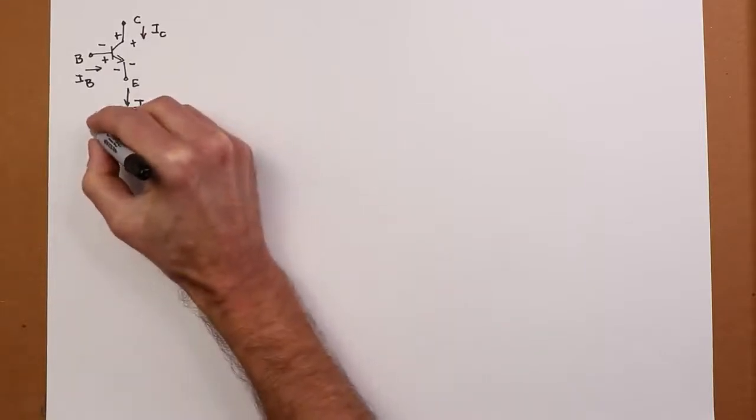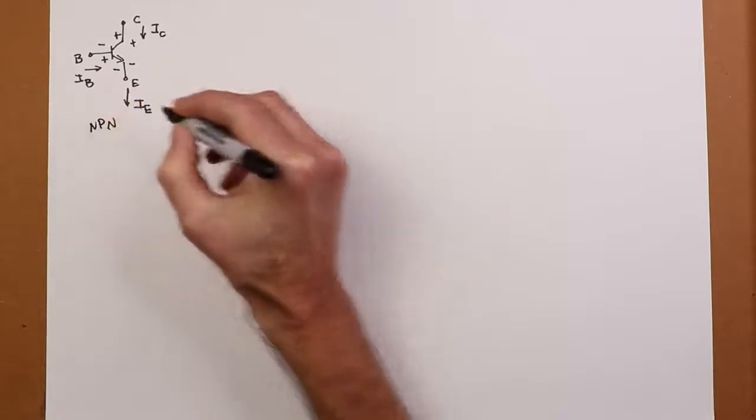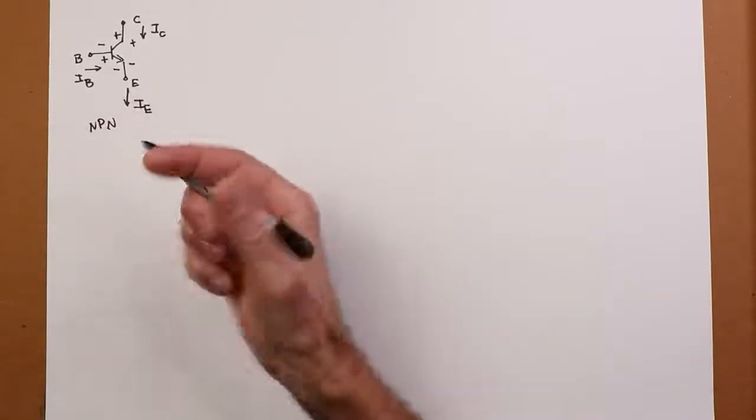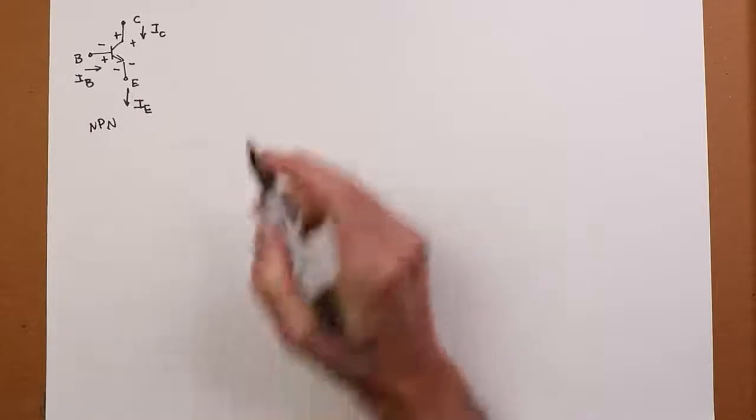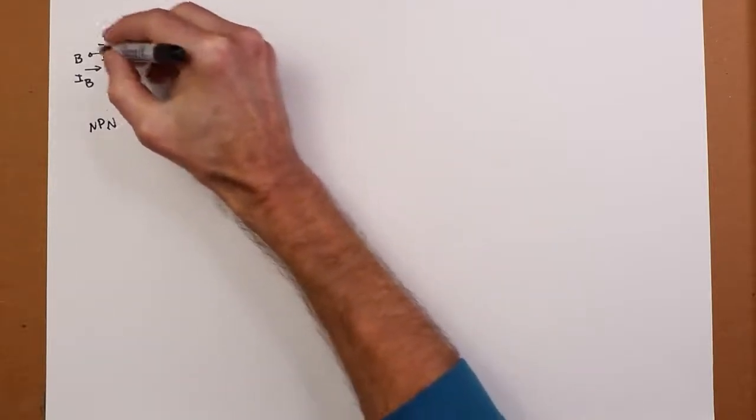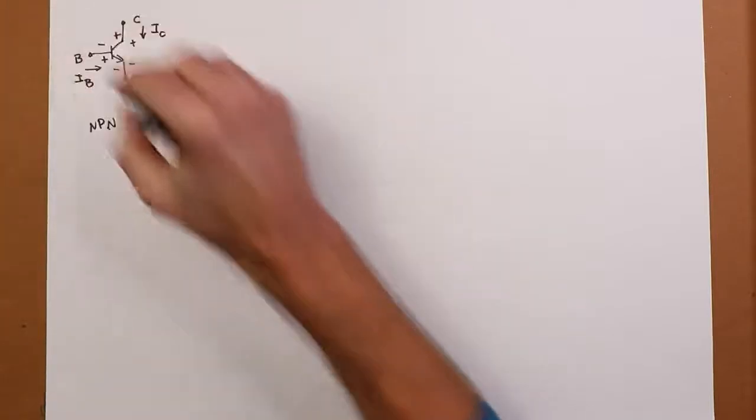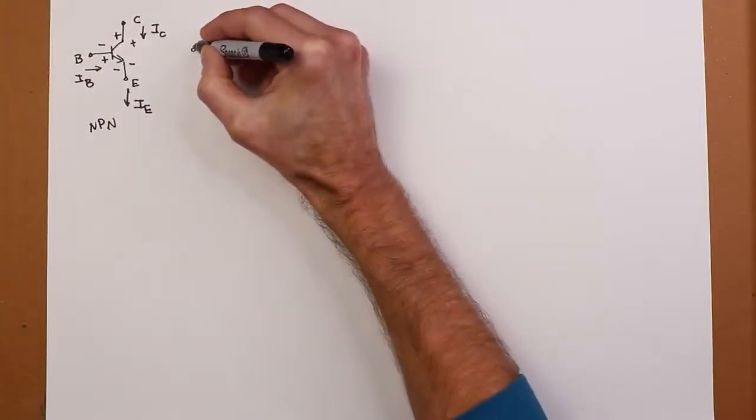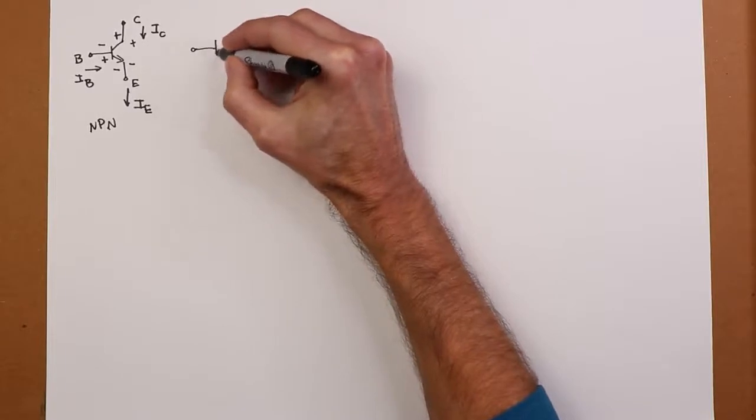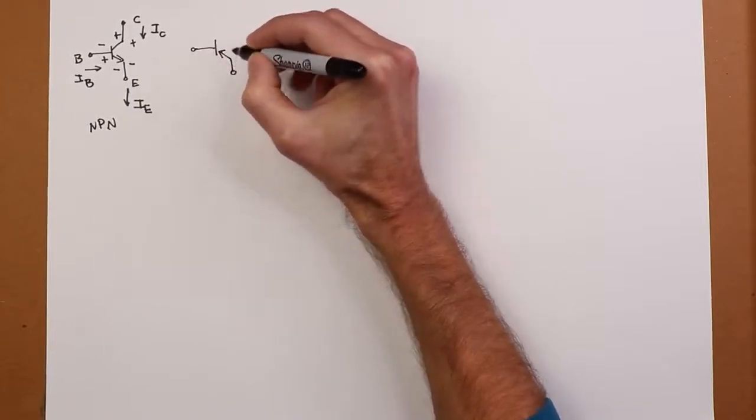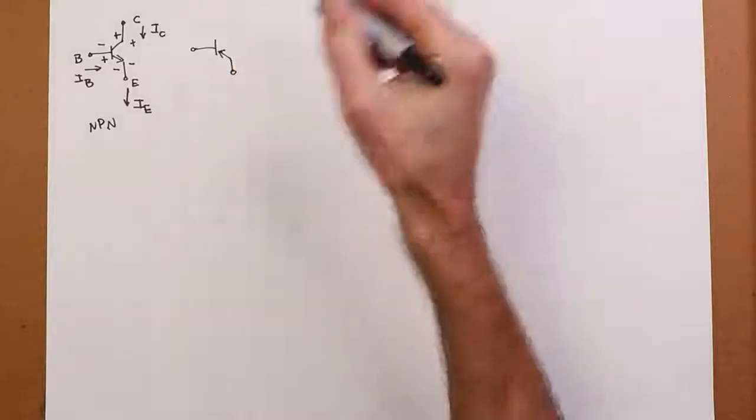Now that's the NPN. The PNP, as I said, everything is sort of swapped. It's kind of like a mirror image. And remember the standard here is arrow always points to n material or in the direction of easy current flow, conventional current flow. So for the PNP, you draw the arrow going in, pointing to the base. PNP.